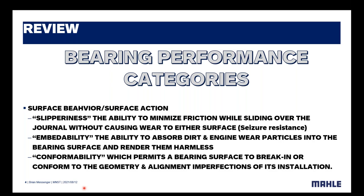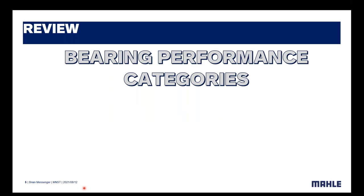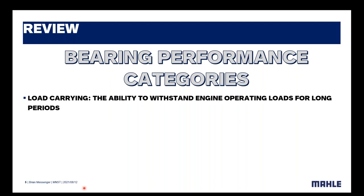Then there's conformability, which allows the bearing to break in. Some engines have more crank flex, some have block flex or rod flex — you want a bearing that's conformable enough to withstand what that engine needs so you get the life out of it. We also talk about the performance categories: what are we looking for as far as load carrying — the ability to withstand engine operating loads for long periods? What is the purpose of this engine and what bearings do we need?